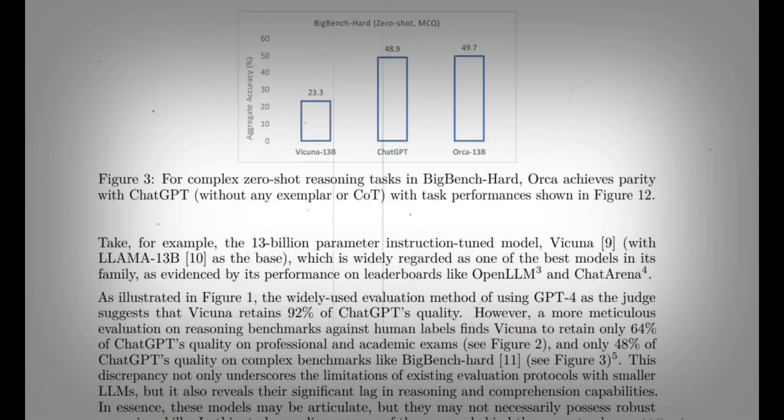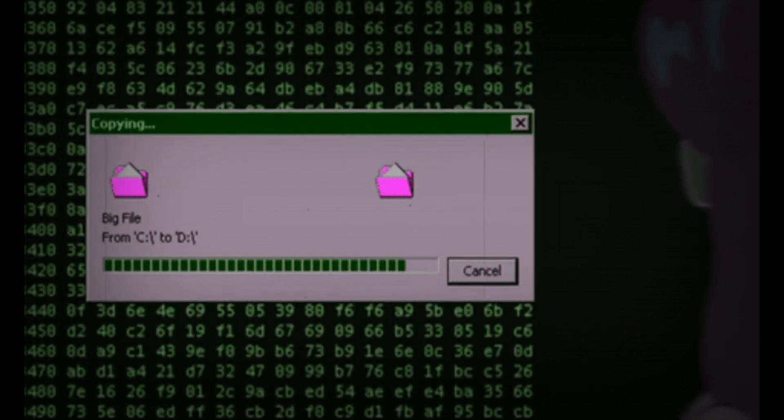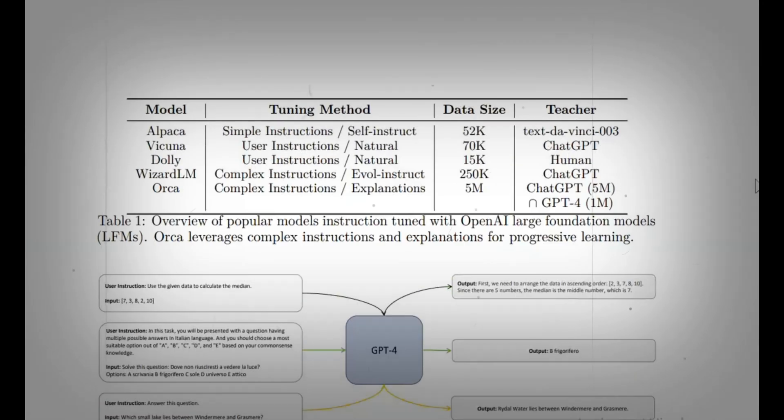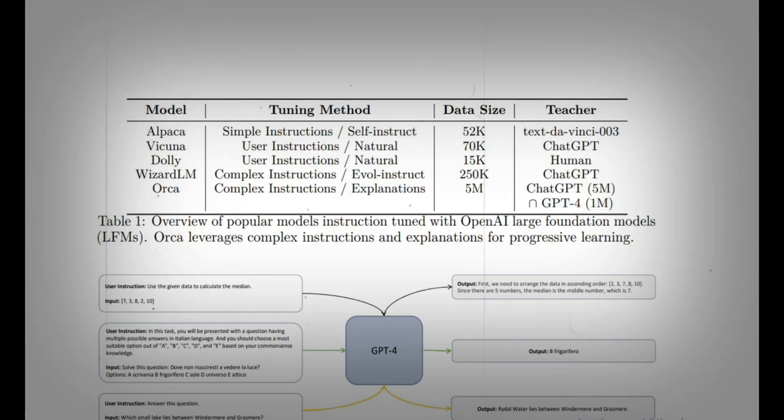Orca is specifically designed to learn from the detailed explanation traces provided by GPT-4. By tapping into these traces, Orca gains the ability to handle diverse and challenging tasks with remarkable accuracy. It's like having a miniature genius in your AI toolkit. With Orca, you can expect accurate answers and a clear explanation of its reasoning process. It's a game-changer for anyone working with AI models.